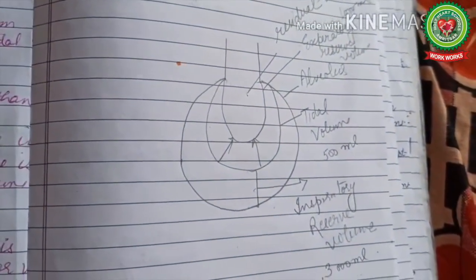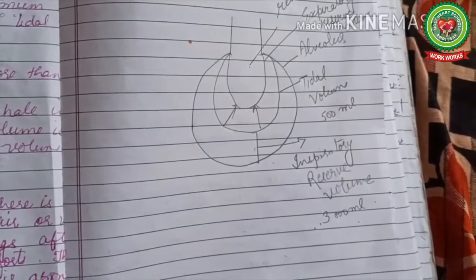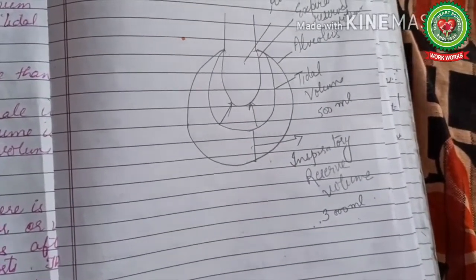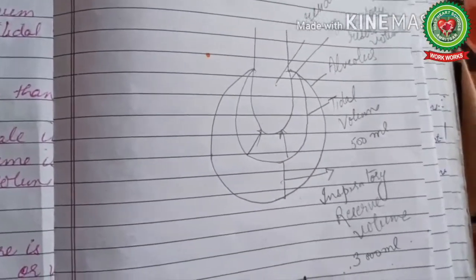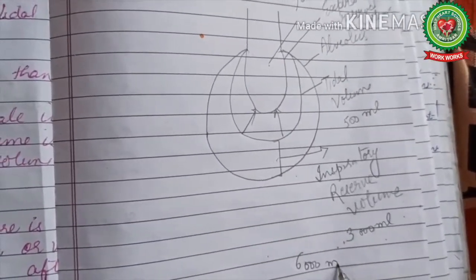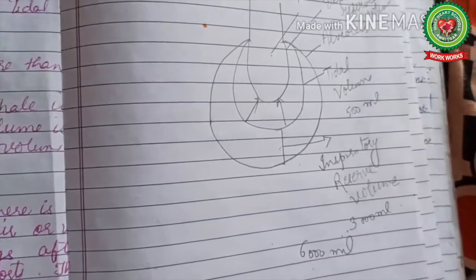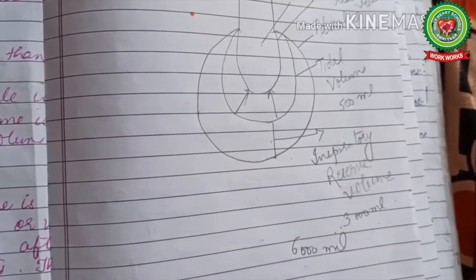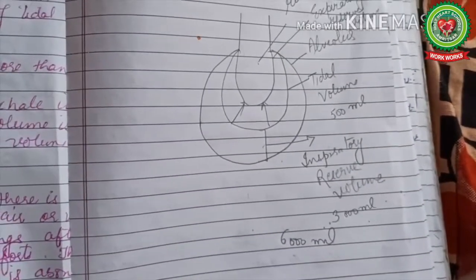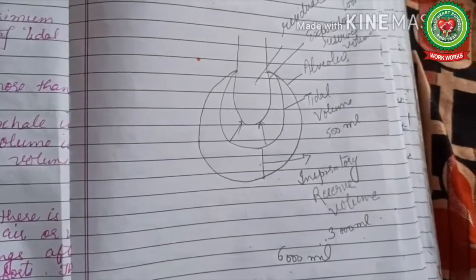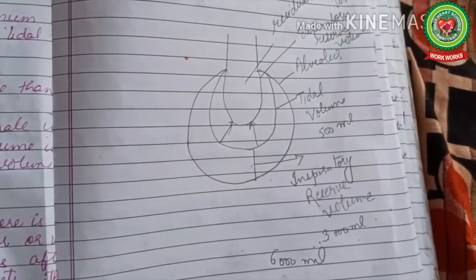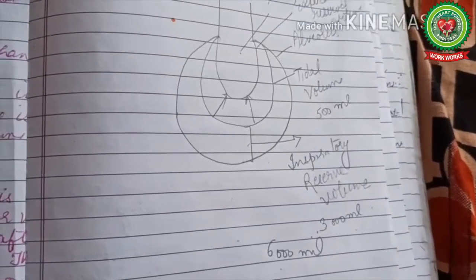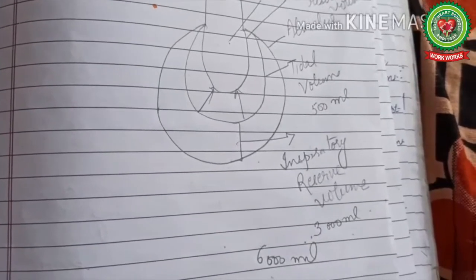These are the four basic lung volumes. Together they form the total lung capacity, which is about 6000 ml. So the tidal volume, inspiratory reserve volume, expiratory reserve volume, and residual volume together form the total lung capacity.